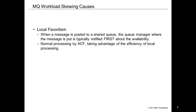The last workload skewing cause is local favoritism. When a message is posted to a shared queue, the queue manager where the message is put is typically notified first about the availability of that message. This is normal XCF processing, taking advantage of local processing efficiency, but it means that your workload can become rather dramatically skewed from time to time.